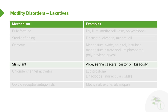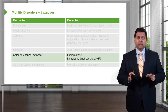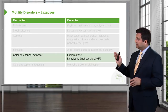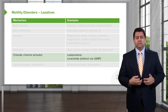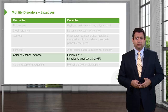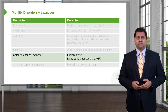Castor oil is no longer used. We now use things like aloe and senna, which are more gentle and easier on the system. Chloride channel activators are less commonly used at this point; they work by increasing fluid bulk within the stool itself.